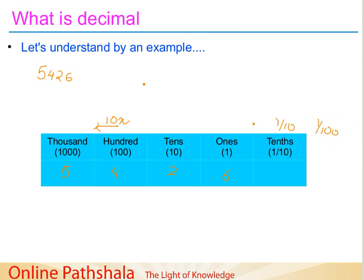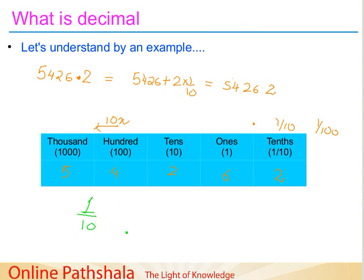So here, if I say a decimal number — I put here a decimal point. This dot denotes the decimal representation. And a number 2 here. So 2 is actually a number which can be said as 5,426 plus 2 into 1/10, because this is 10 times smaller than the 1's place. So 2 can be represented in the tenths place. We have learned a very important concept: 1/10, or one tenth, can be represented as 0.1.